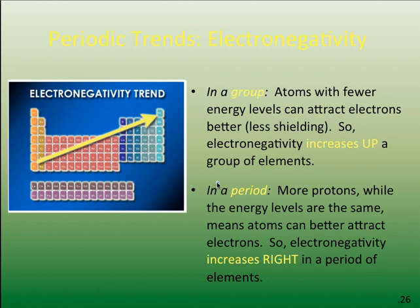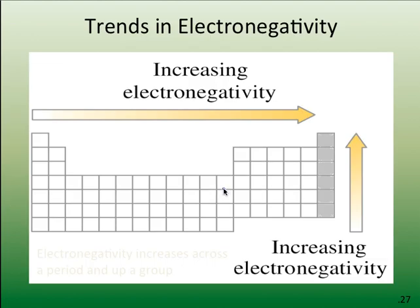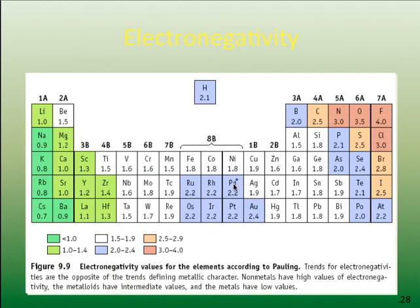Fluorine is the highest electronegative element; francium is the least electronegative. Noble gases are typically not included because they have a fully filled energy level. The Pauling scale goes from less than one to four, with fluorine set at four. Electronegativity is also kind of anti-metallic character — fluorine is the most anti-metallic, while francium or cesium would be the most metallic. 3D bar graphs show how high fluorine is and how low cesium ranks.